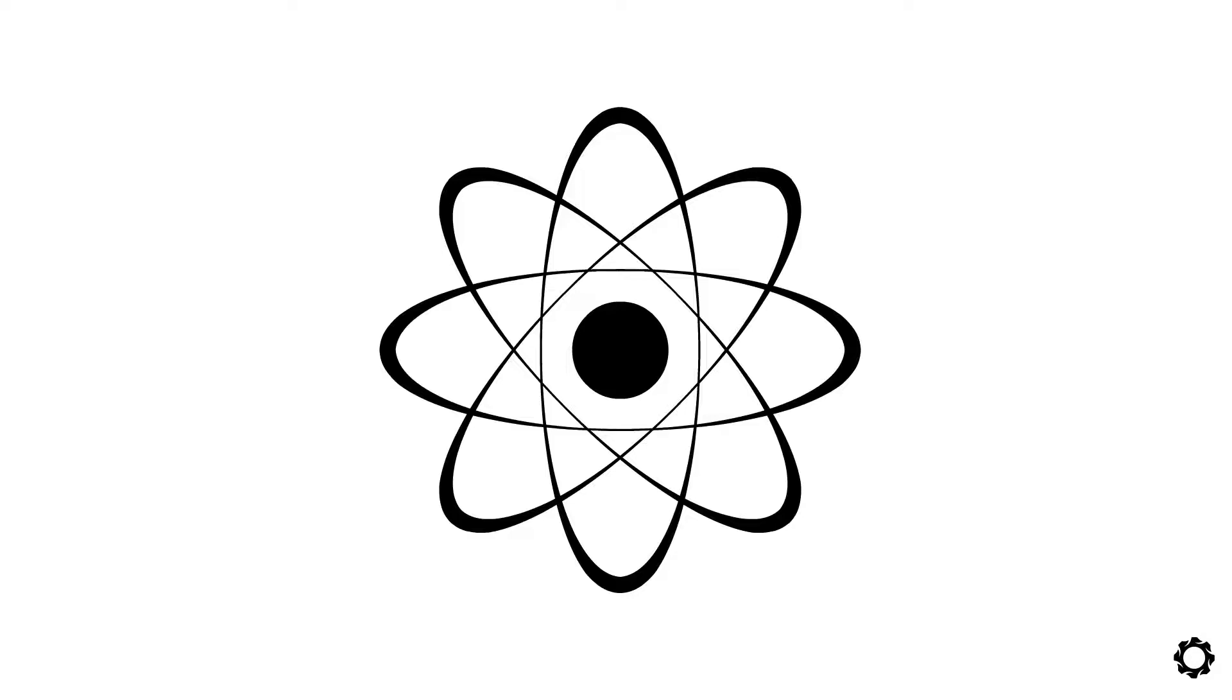This we know. Now, atoms are not solid. They have three subatomic particles: protons, neutrons, and electrons. The protons and neutrons are contained in the center of the atom, while the electrons orbit in the outside.